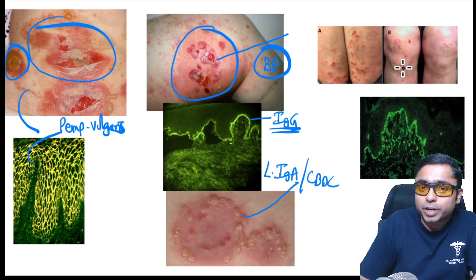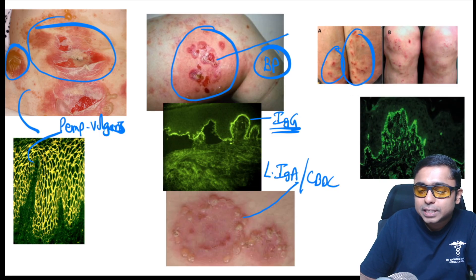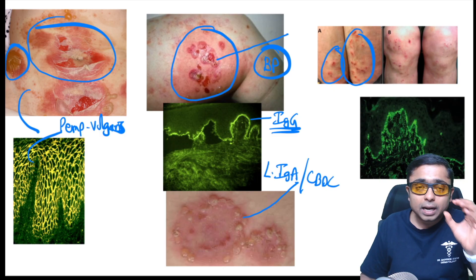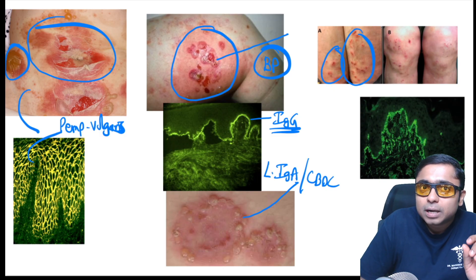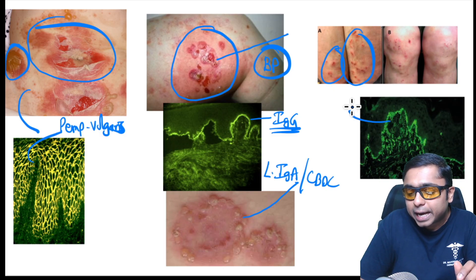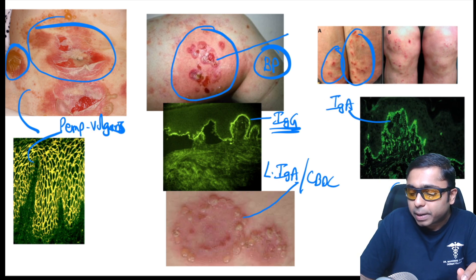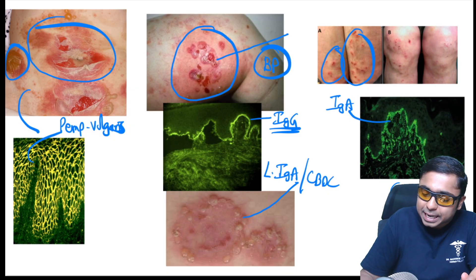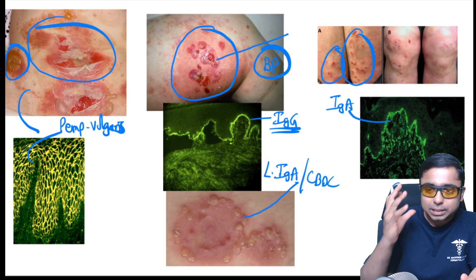The last picture shows excoriated papules over extensor surfaces with no intact vesicles or bullae. This disease is associated with gluten-sensitive enteropathy — BROW: Barley, Rye, Oats, Wheat. Biopsy shows subepidermal blister. Direct immunofluorescence shows IgA in a granular pattern, and biopsy shows neutrophilic microabscesses in the dermal papilla. The diagnosis is dermatitis herpetiformis, also called Duhring's disease.